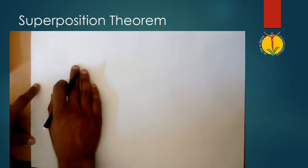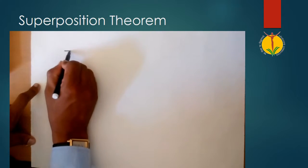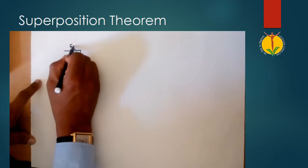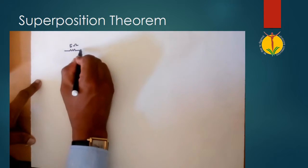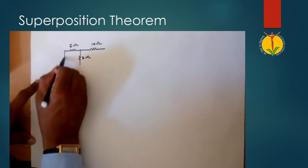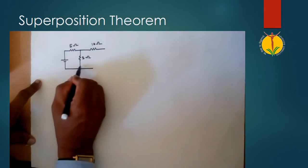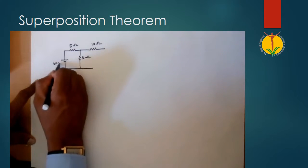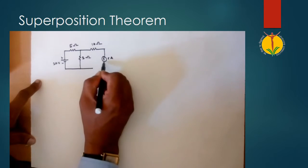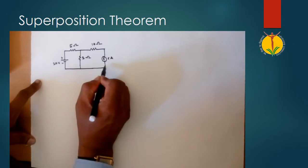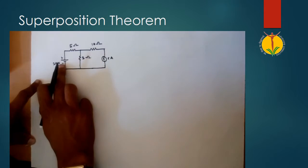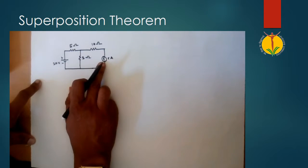So let us prove this theorem. We have resistors of 5 ohm, 3 ohm, and 10 ohm, one voltage source of 20 volts, and a current source of 5 amperes. Let us find the current flowing through this 3 ohm resistor due to the 20 volt source as well as due to the 5 ampere current source.